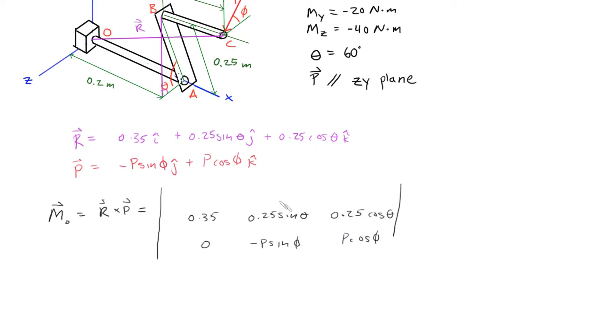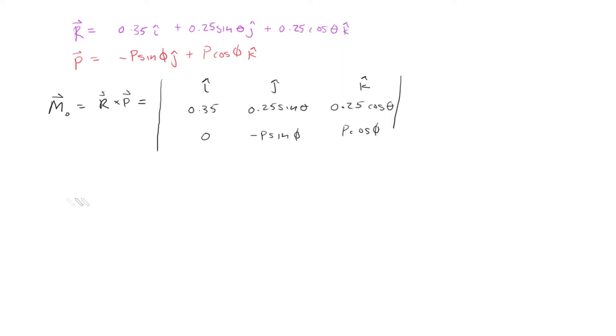The top row is simply our unit vectors, i, j, and k. To perform this cross product, we can say that i is simply 0.25 sine theta times P cosine phi minus,